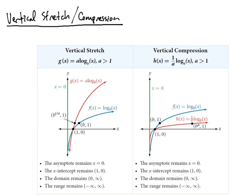Next, let's look at vertical stretch and compression. If there's a leading coefficient greater than 1, that vertically stretches the graph. If the leading coefficient is less than 1, that compresses the graph. The x-intercept does not change regardless of whether the graph is stretched or compressed. All that happens is the second key point moves, and we see the graph become either steeper or more shallow.